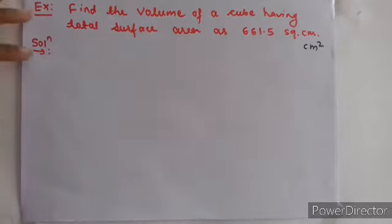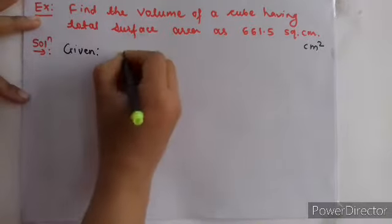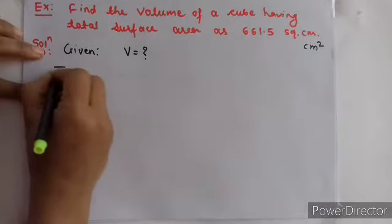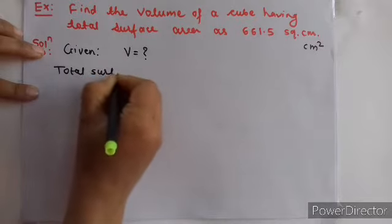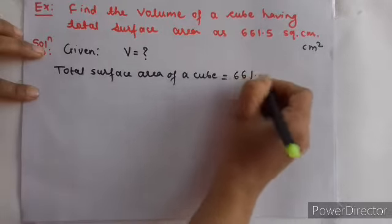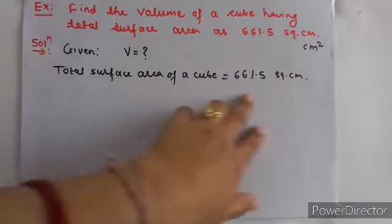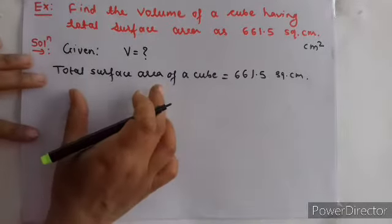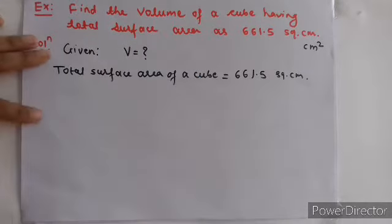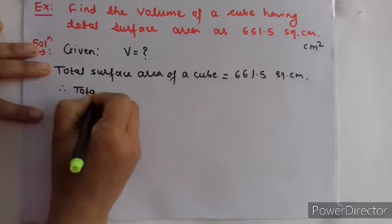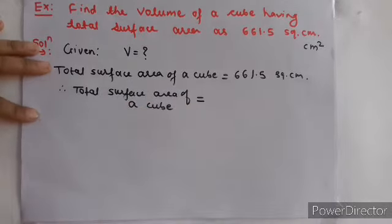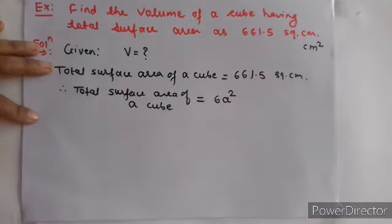तो सबसे पहले हम लिखते हैं क्या given है. So given: total surface area of a cube = 661.5 square centimeter. Find करना है: volume. अब total surface area का formula हमें पता है, तो उसी का use करते हुए हम यह example solve करेंगे. So therefore, total surface area of a cube का formula है 6 into side का square, यहने 6a². यह formula हमने लिख दिया क्योंकि हमें question में यही given है — total surface area.